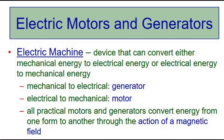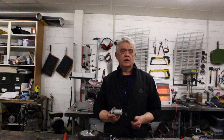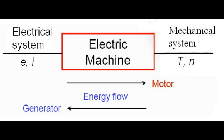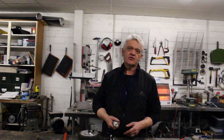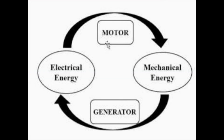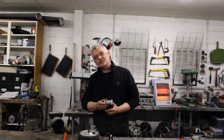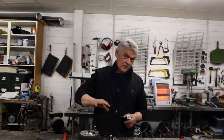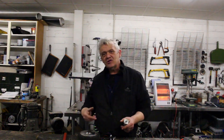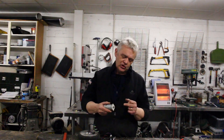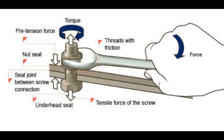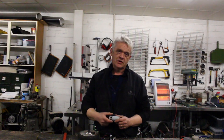Motors and generators are exactly the same thing. If I put power into a motor it will turn; if I turn a motor it will produce power. The only difference is a motor gets power in and a generator you turn to get power out. Even though we have this enormous selection of motors, the best one doesn't really matter that much. What matters is the turning force you can apply, and the speed at which it turns.